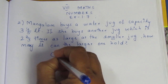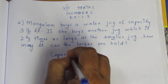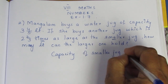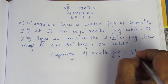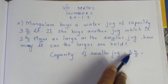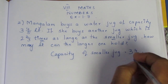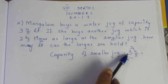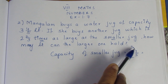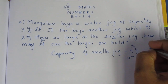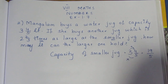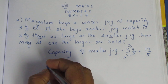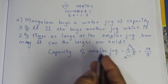Capacity of smaller jug is 3 and 4/5. We convert this mixed number to an improper fraction. That gives us 19 by 5. The denominator is 5. Now, how many times larger is the bigger jug? It is 2 and 2/3 times.